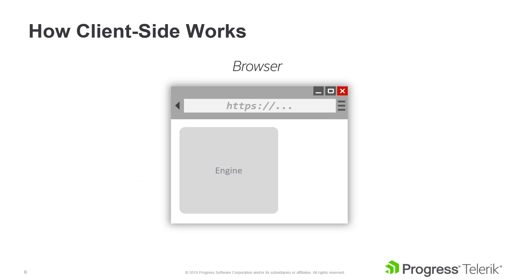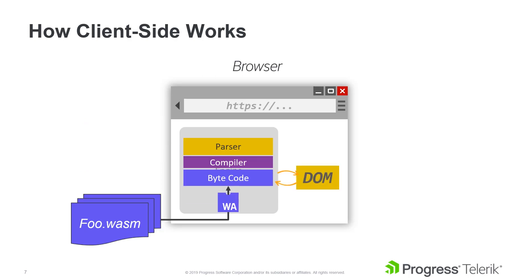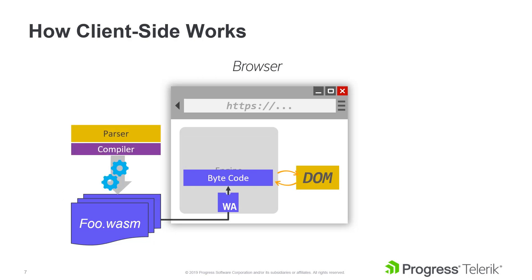In a typical application, JavaScript is downloaded by the browser. It's then parsed, compiled, and turned into bytecode before it can be executed. A more modern approach is to use WebAssembly, which is a standard bytecode that the browser can execute. This is what makes WebAssembly different — it's parsed and compiled before it's delivered to the browser.